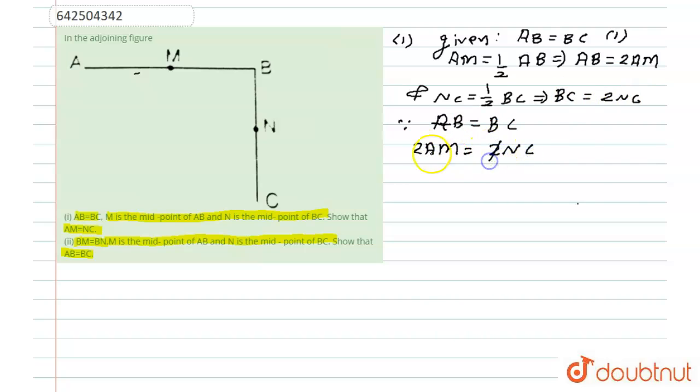So putting AB as 2AM and putting BC as 2NC, the 2s cancel out, and this implies that AM is equal to NC. So this is the proof of the first part.